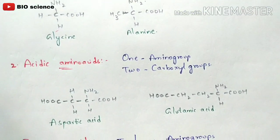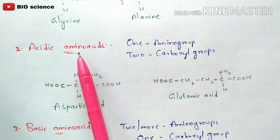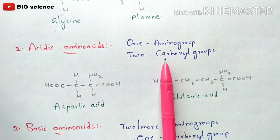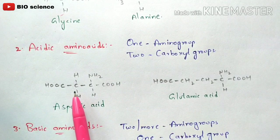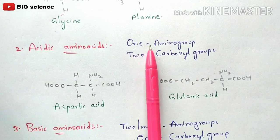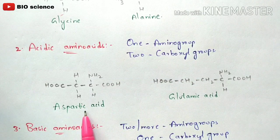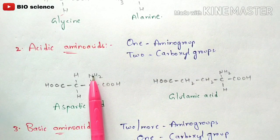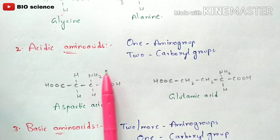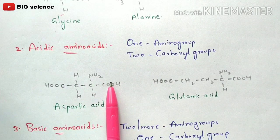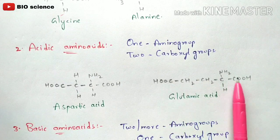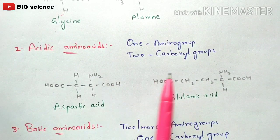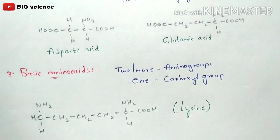What are acidic amino acids? In their structure, they contain one amino group and two carboxyl groups. The best examples are aspartic acid and glutamic acid. In the structure of aspartic acid, only one amino group (NH2) is present, but two carboxyl groups (COOH) are present. The same applies to glutamic acid — one amino group and two carboxyl groups. These are the best examples of acidic amino acids.